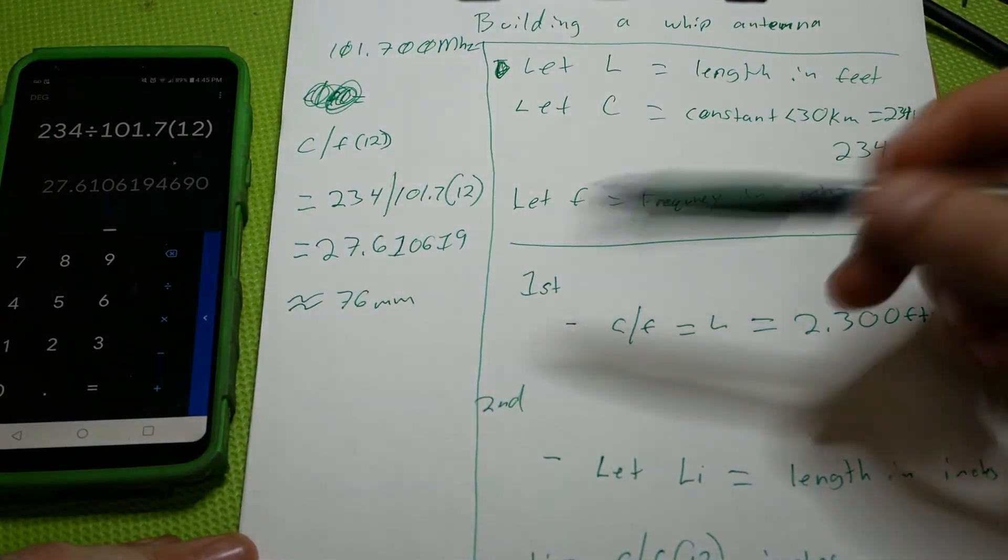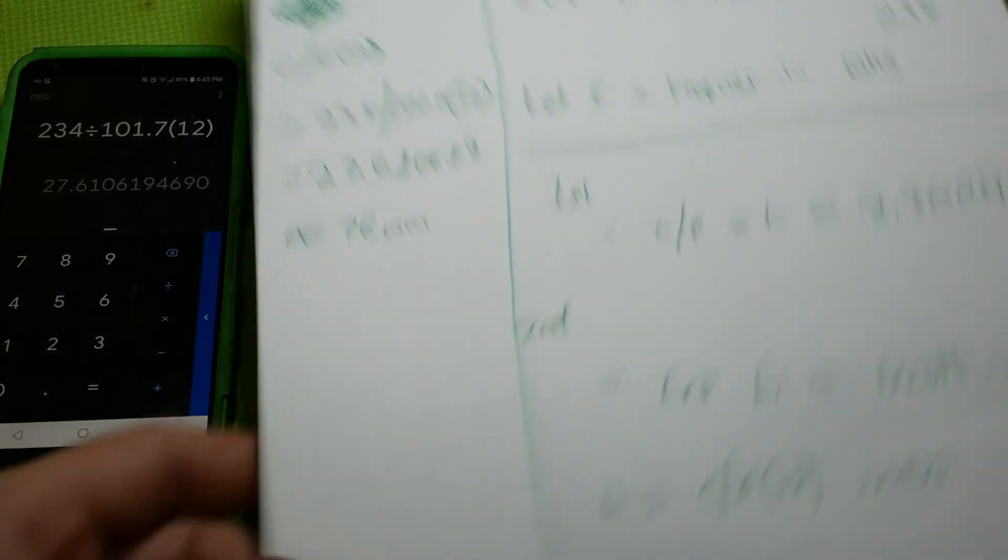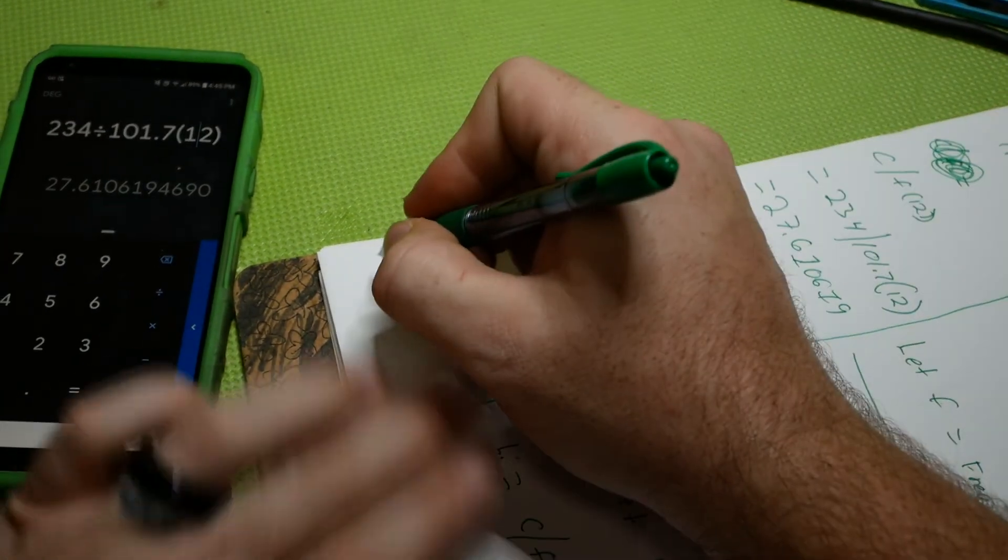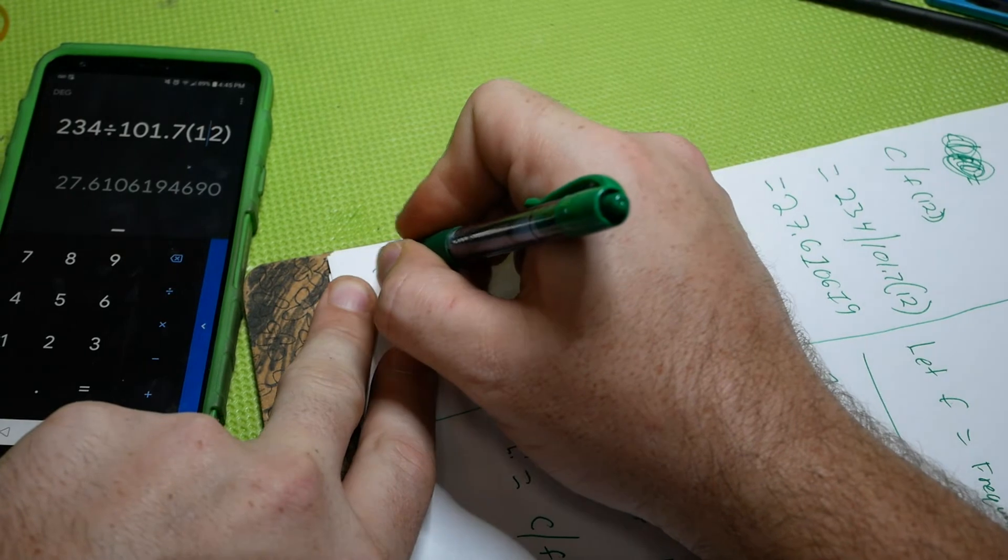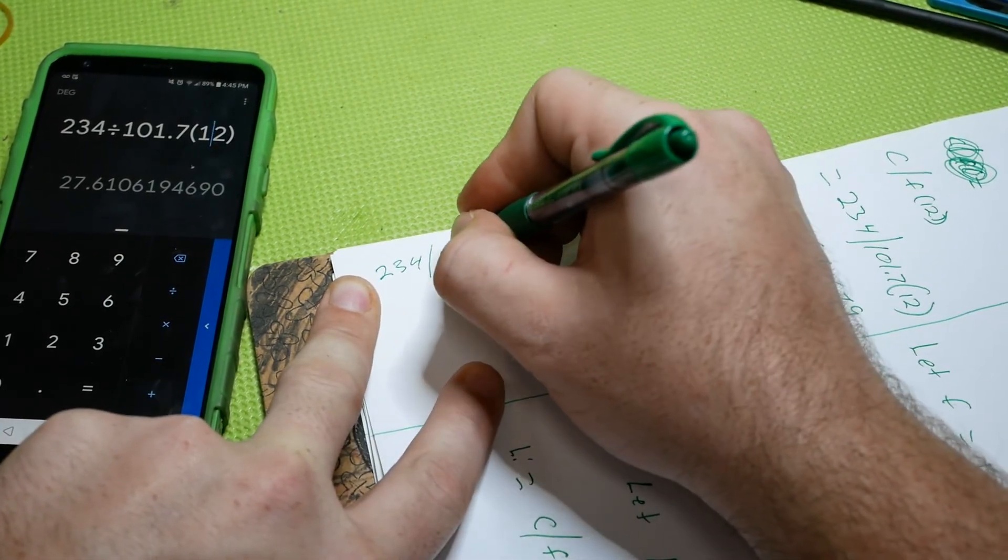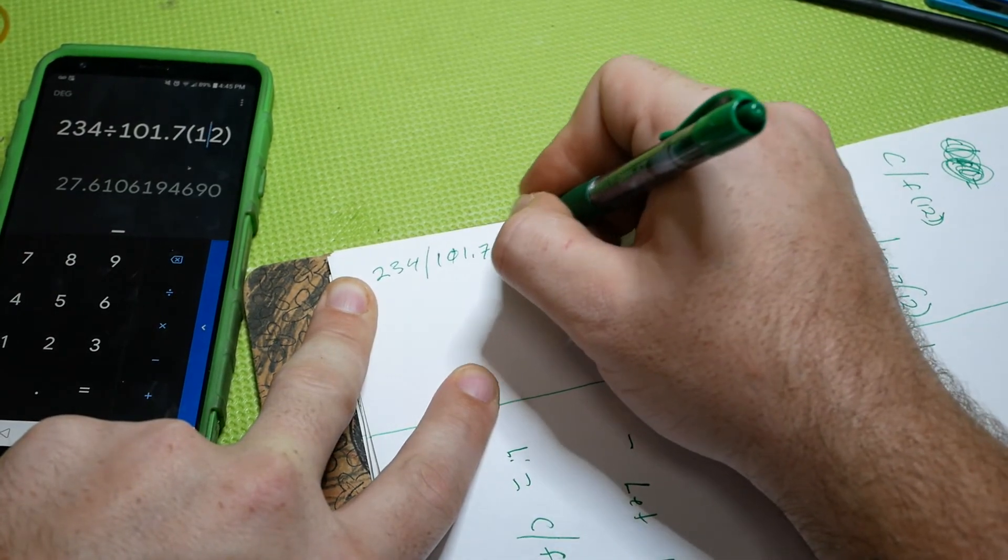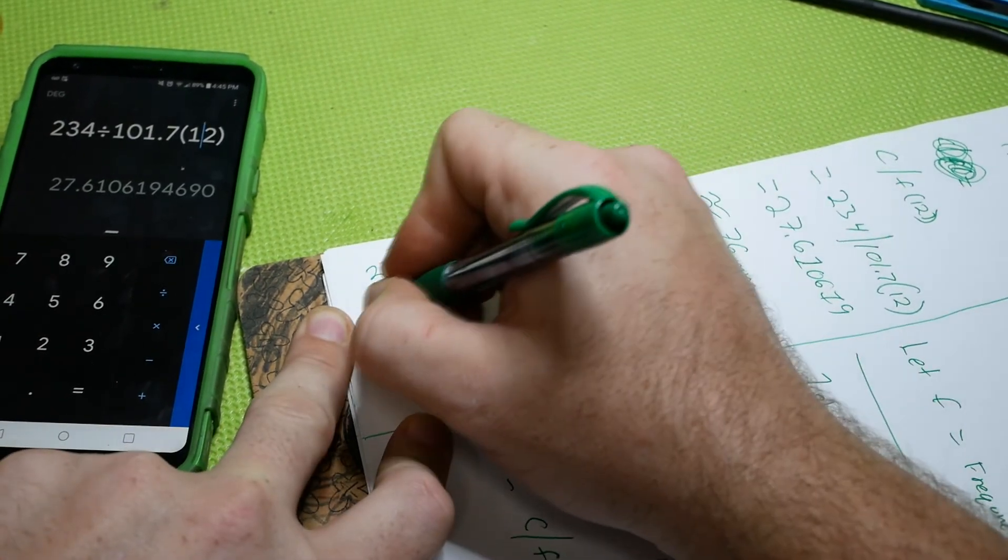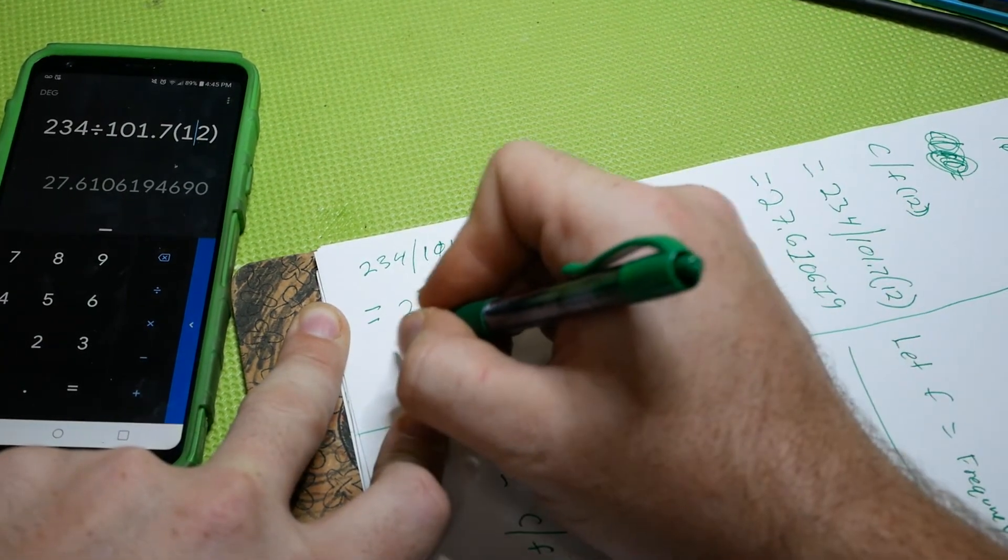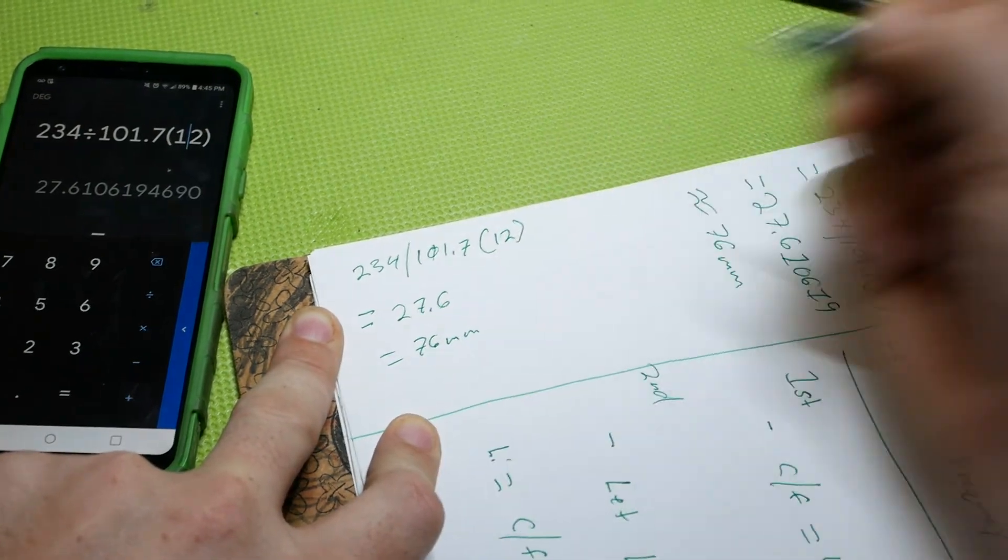This is the formula, now if you were to do the whole thing in long form, we'll turn this because again, I'm trying to use up all this space. The long form would be 234 divided by 101.7 times 12, and that is equal to 27.6 or equal to 76 millimeters.